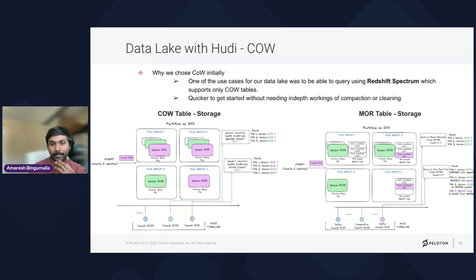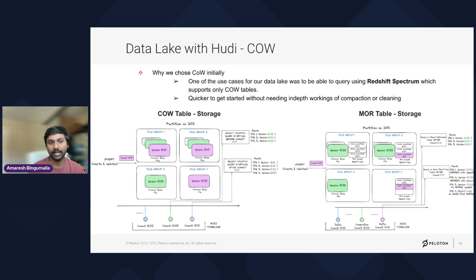Hoodie supports two different table formats: COW (Copy-on-Write) and MOR (Merge-on-Read). We started off with COW mainly because our partner teams were using Redshift Spectrum for analytics, and Redshift Spectrum only supports COW tables — because COW stores data completely as Parquet files, which Redshift Spectrum can easily decode. COW is also much easier for a new person onboarding, as the team doesn't need to know the in-depth workings of compaction, cleaning, or storage handling.